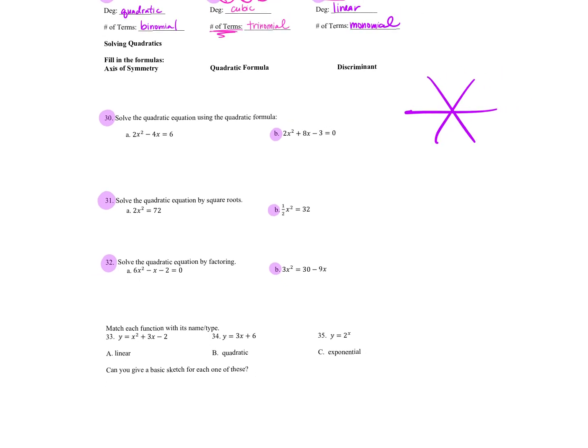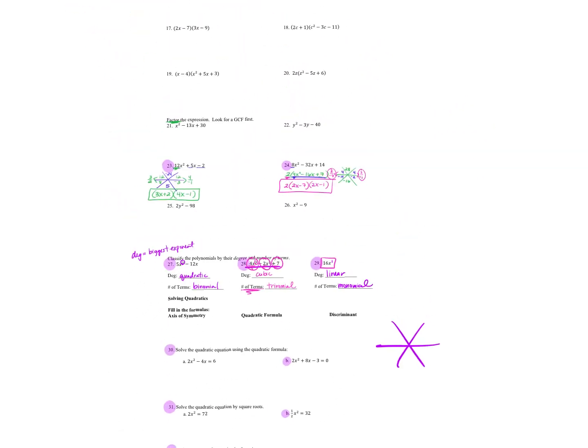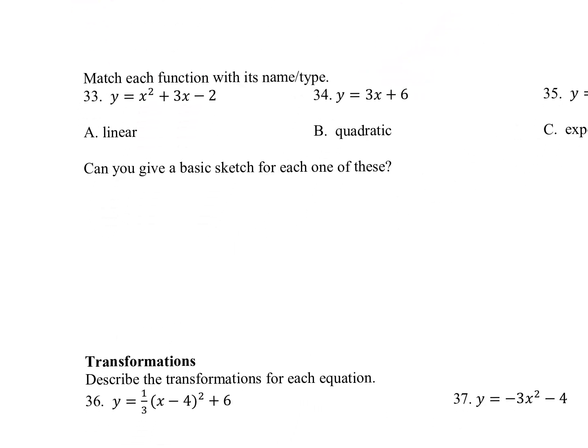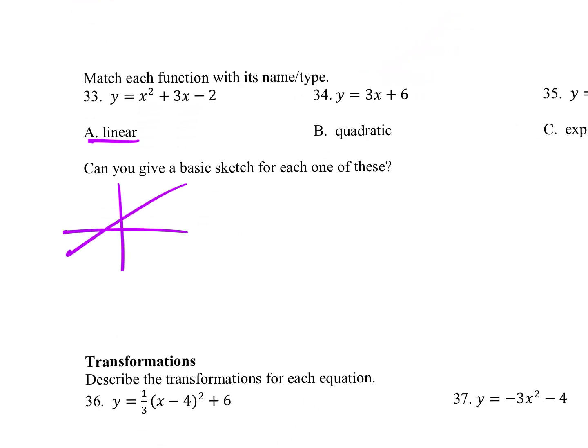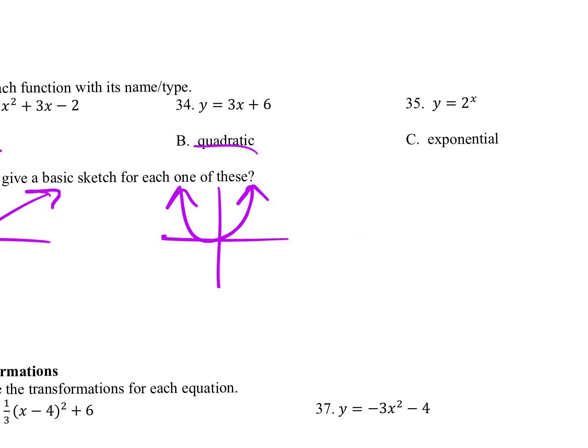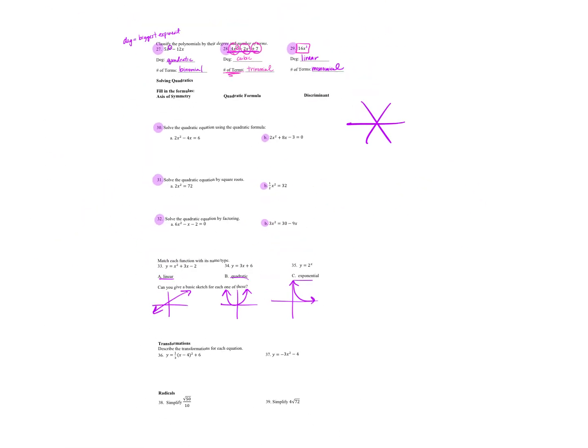You have the graph and then you have the arrow. The sketch? Yeah. Linear is a straight line. Quadratic is a U-shaped curve. And exponential is something that looks kind of like that.